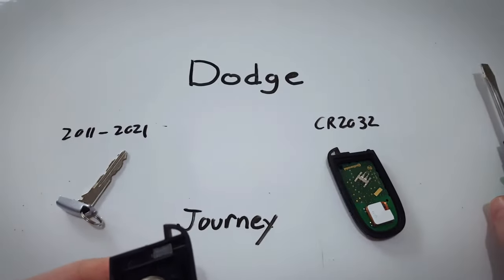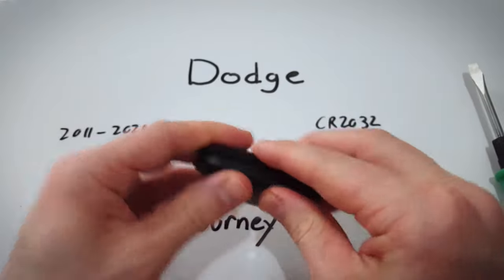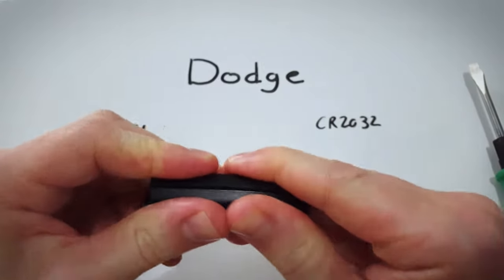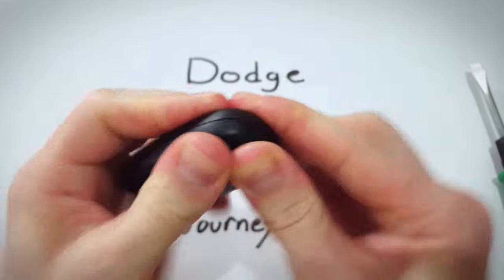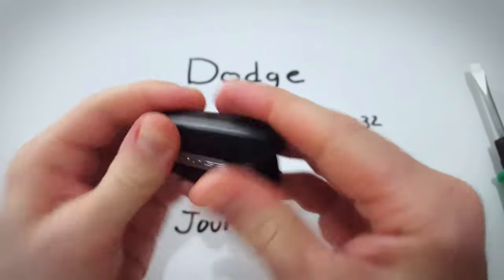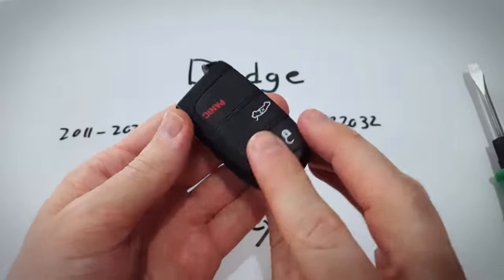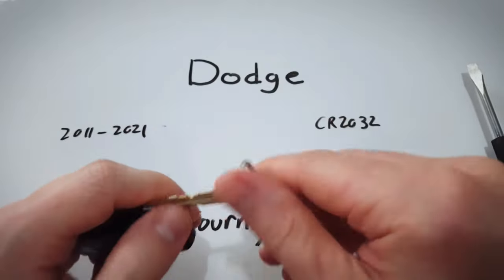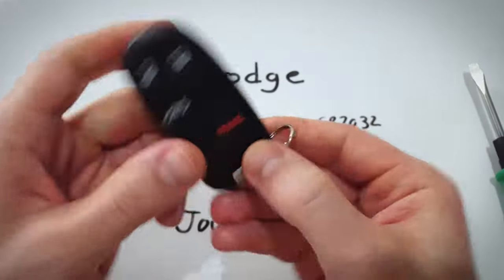And the rest is very simple. We're just going to click this back together. It takes a bit of effort but you just squeeze until the whole opening along the seam is closed. Don't forget to put your internal key back in.